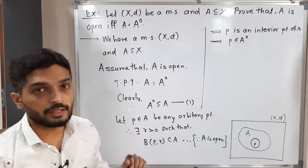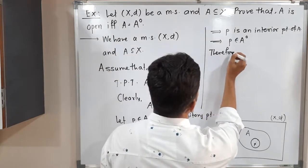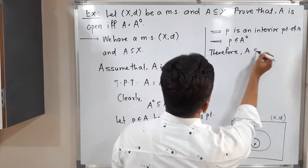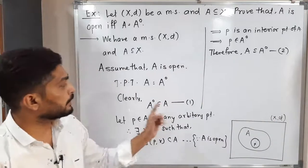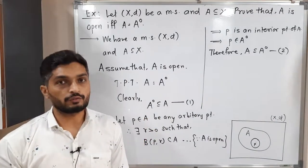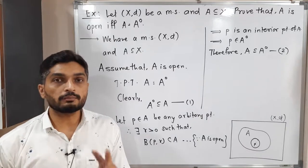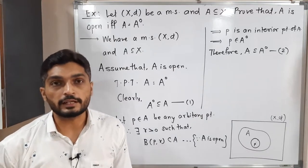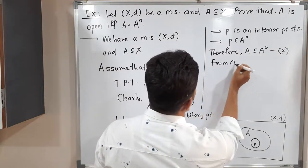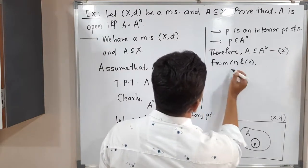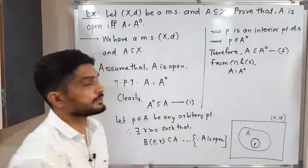We had taken element P from set A and proved it is in A interior, so we can write A is a subset of A interior. I am calling this equation (2). From (1) and (2), both sets are equal, so we can write A is equal to A interior. In this way we proved the first part.